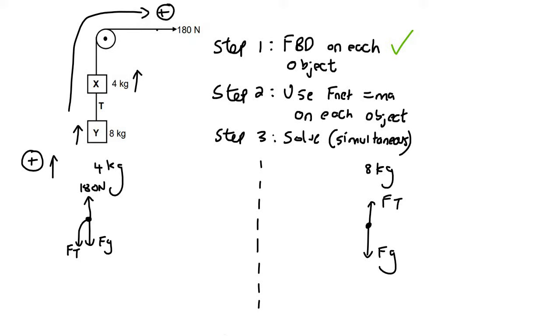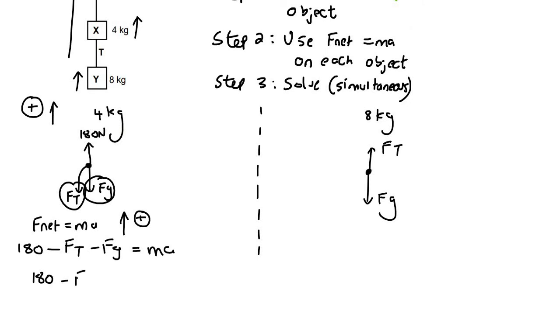Now we move on to step two, where we use F net equals ma on each object. So we say F net equals ma. And we choose upwards as our positive direction of choice. And now you just go fill in all the forces for F net. So have a look here, we're going, well, all of these forces would be included because we're going in the vertical direction. So you would say 180 minus, because this one's pointing down, and then minus, because this one's also pointing down, Fg. Actually, we can work out Fg. Well, let me first write this down, Fg equals ma. And so we can say 180 minus FT. Now, that's a four kilogram block. So it'll be four times 9.8 for the Fg. And then that's equal to its mass times the acceleration, which we don't know. I'm then just going to simplify this a little bit. So I'm going to say 180 minus four times 9.8. And so we get 140.8 minus FT equals 4a.